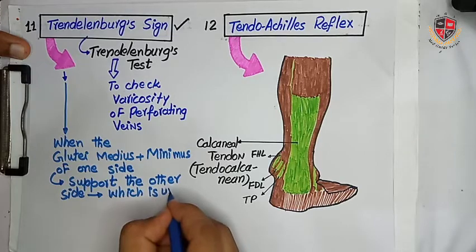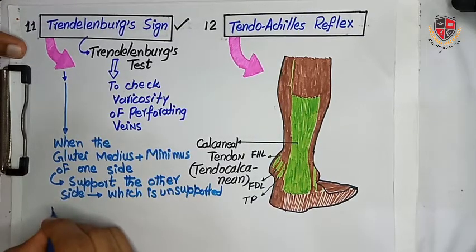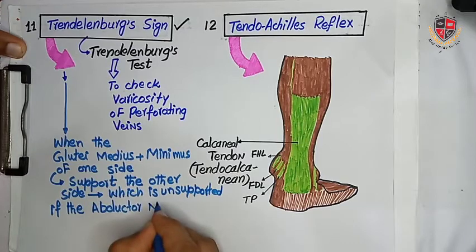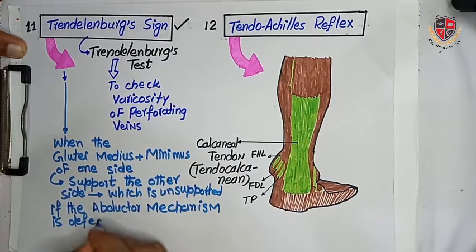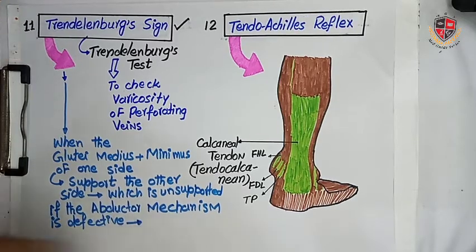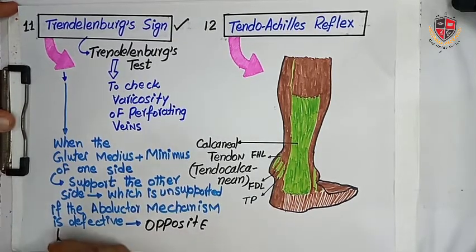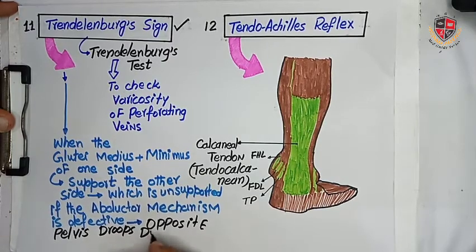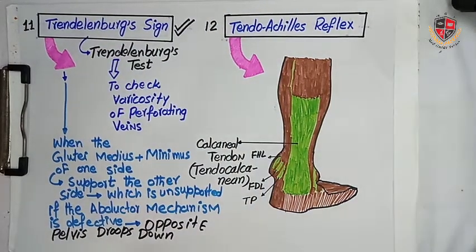If the abductor mechanism is defective, then the opposite pelvis droops down and cannot be supported. This is called Trendelenburg's sign. In Trendelenburg's sign, the body weight of the supported side, which is defective, does not support the unsupported side.